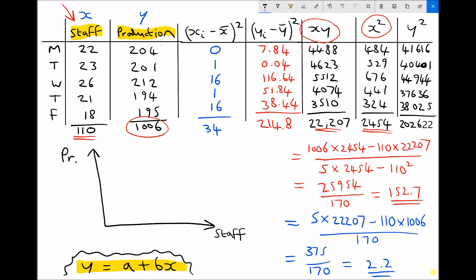When we calculated the formula for the regression line, we found the value of a to be 152.7. The value of a is the y-axis intercept here: 152.7.